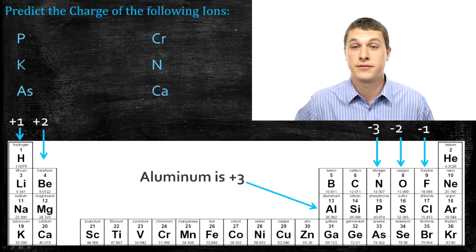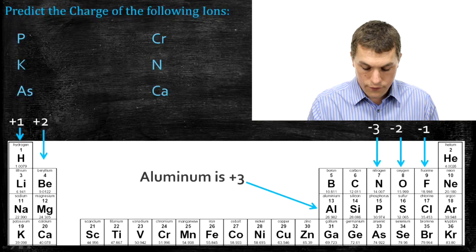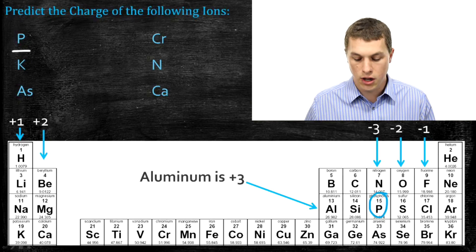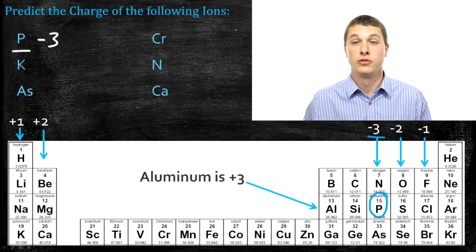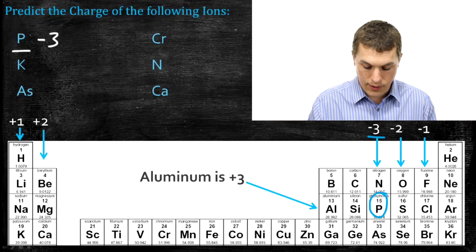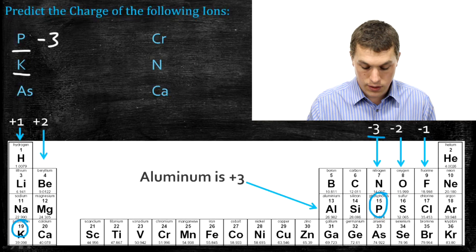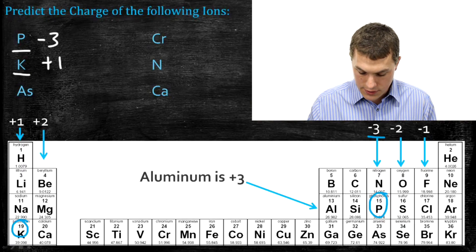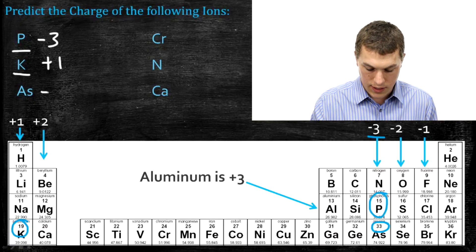Now let's go ahead and practice. We have six different elements, and we want to know what charge they will tend to take on. For phosphorus (P), it's in the column with a charge of negative three, so phosphorus tends to have a charge of negative three — meaning it gains three electrons. Potassium is in the first group, below hydrogen, lithium, and sodium, so it forms a positive one ion. Arsenic (As) is below phosphorus and also tends to form a negative three ion. Chromium is in the middle of the periodic table — that's the D block — so we know it's positive, but we don't know how positive.